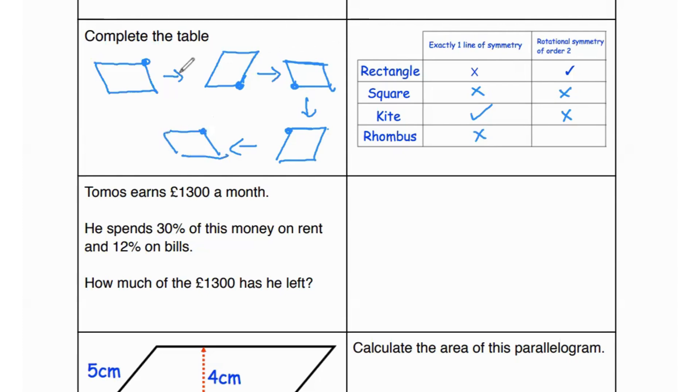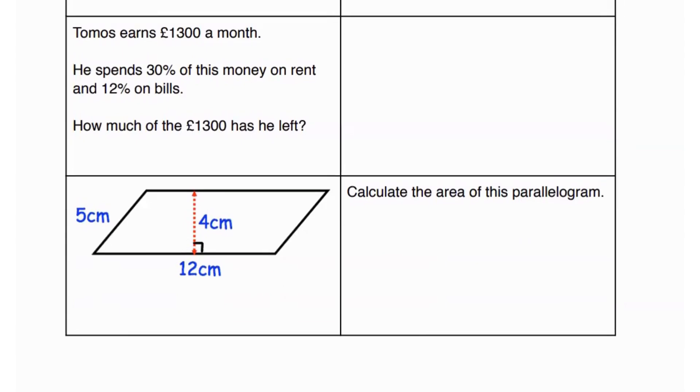So as you can see we regained the original shape of the rhombus over here and here. Which means twice. So that shows that the rhombus has a rotational symmetry of order 2. The next question says Tomos earns £1300 a month. He spends 30 percent of this money on rent and 12 percent on bills. How much of the £1300 has he left?